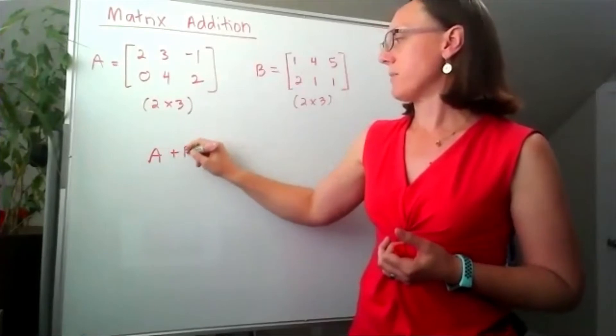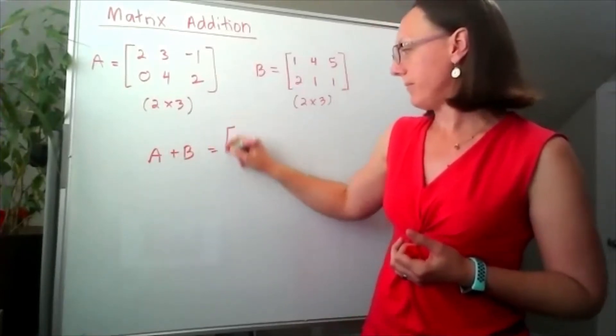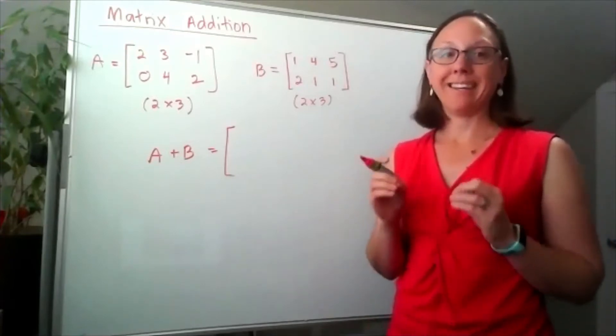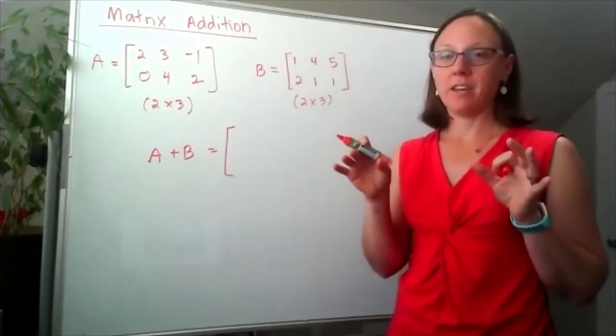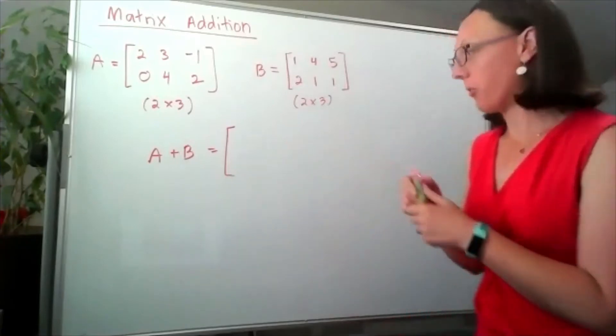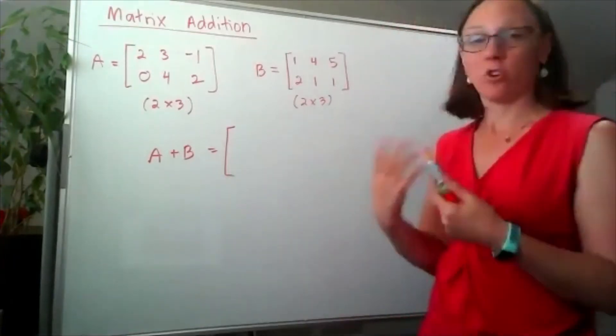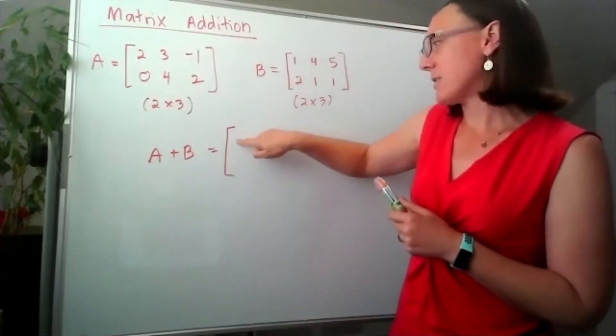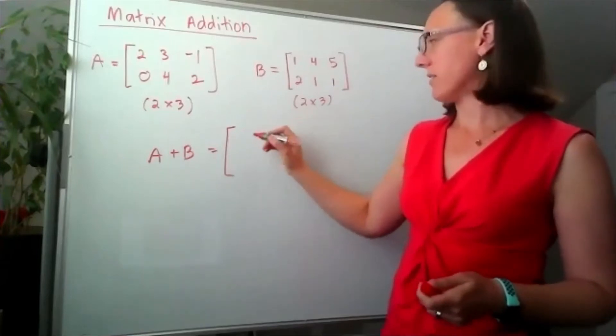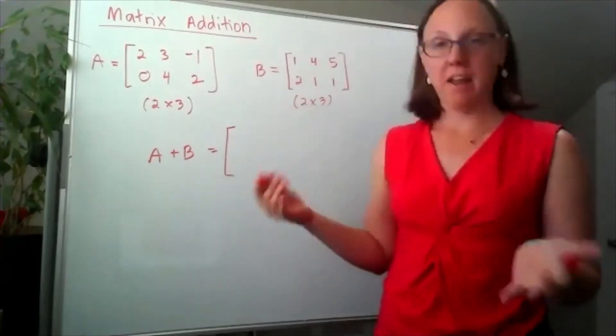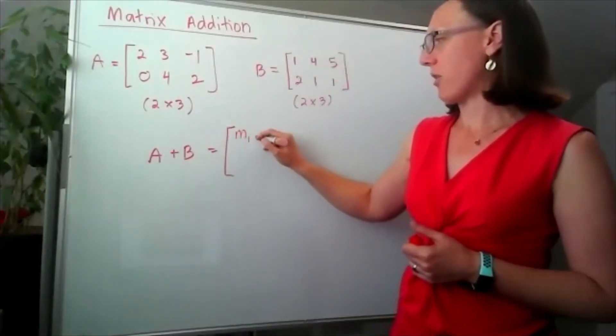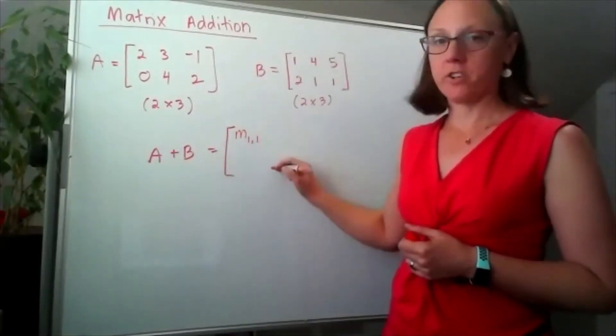A plus B, the result is that I'm going to add each of the entries and put them in exactly the same spot. So, this is a notation thing. This spot in my new matrix, and I'll pick a letter M, this spot in my matrix is the first row, first column.